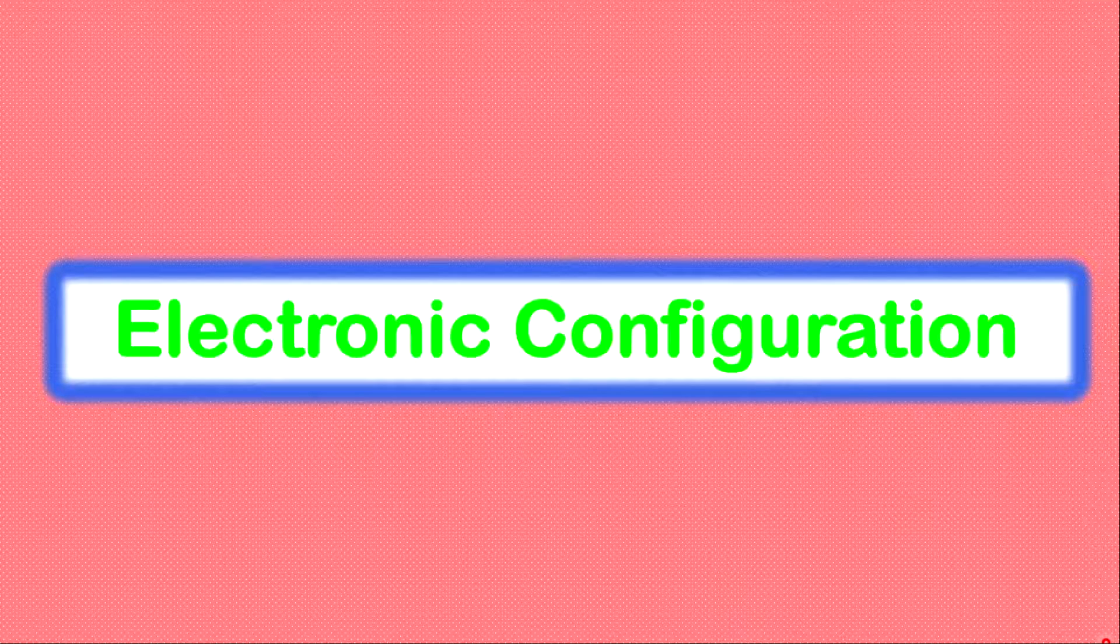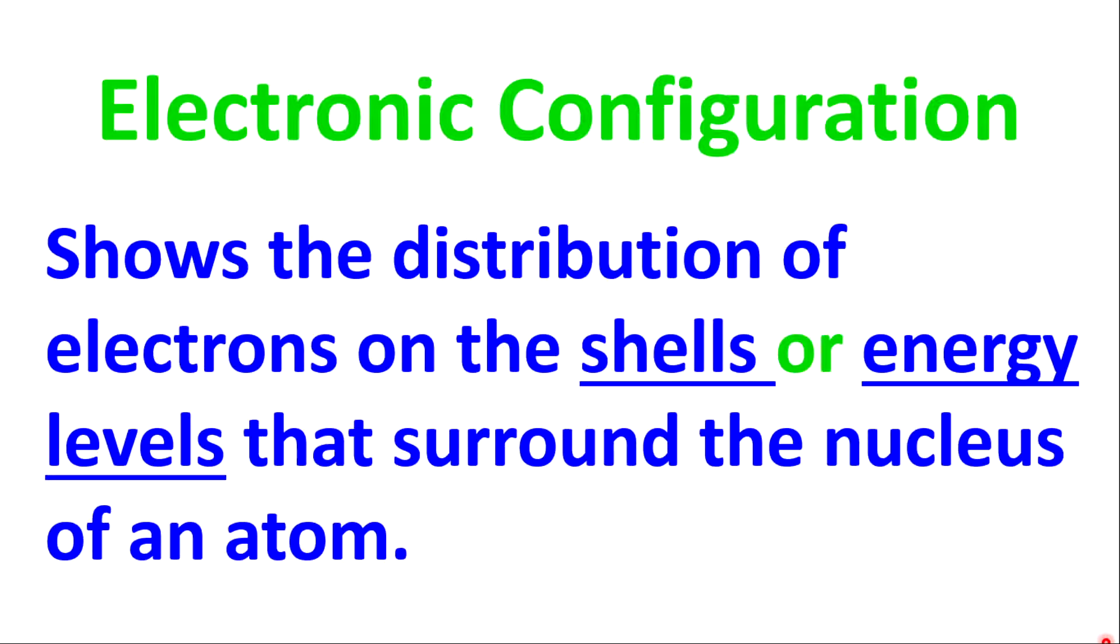Welcome back to another learning series with Mr. Knight. Today we are looking at electronic configuration. First, let us define what is electronic configuration. Electronic configuration shows the distribution or arrangement of electrons on the shells or energy levels that surround the nucleus of an atom. Today we are only focusing on the principles or the rules that govern the first 20 elements of the periodic table.